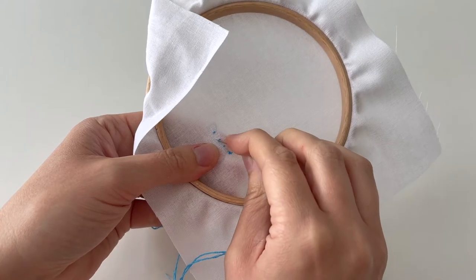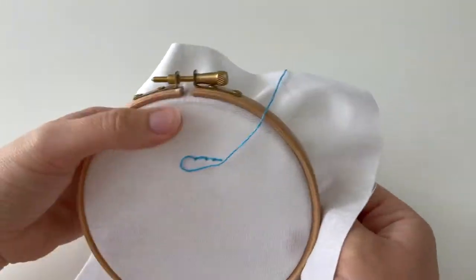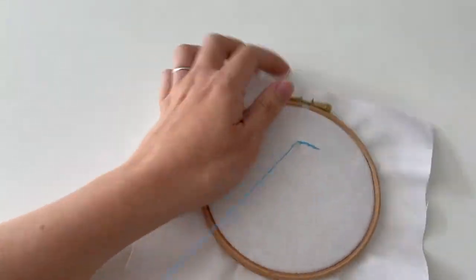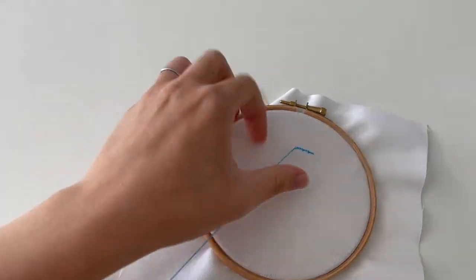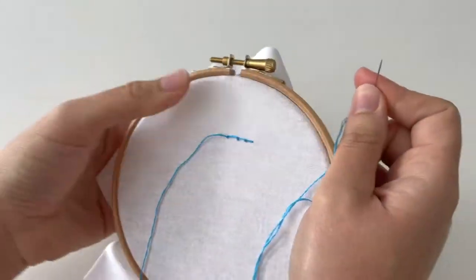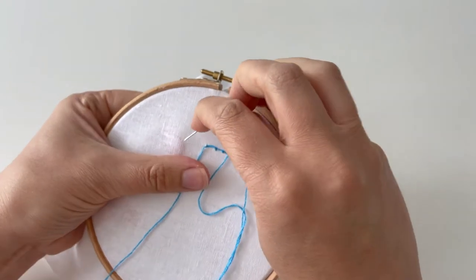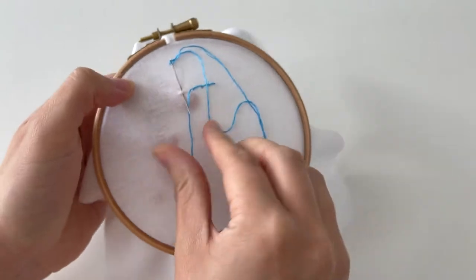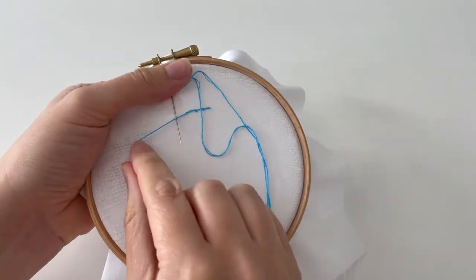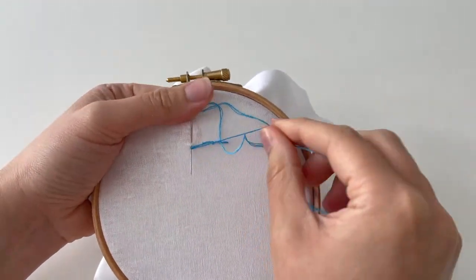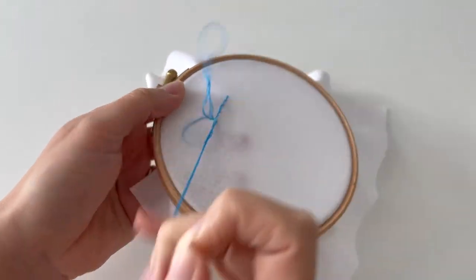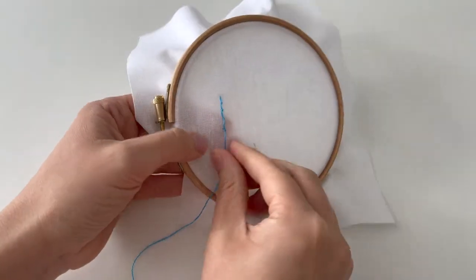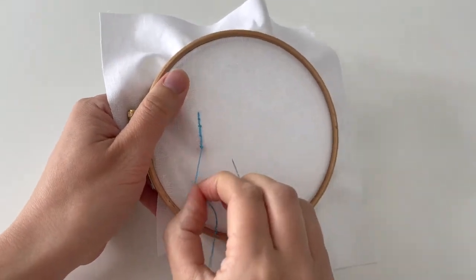So a reminder to myself: remember before you start the next stitch just make sure that all of your threads are nicely pulled together so that they're going to form together. I'm just going to leave that for now. I could unpick it if I was being really picky, but part of the point of this project is to be less picky and go for it and just show you exactly what's happening as I'm stitching.